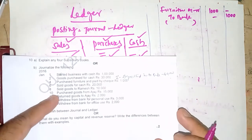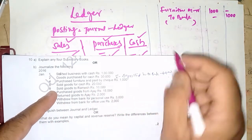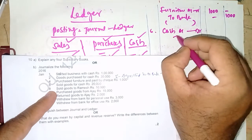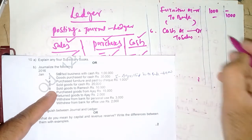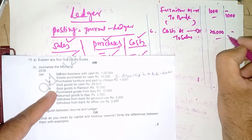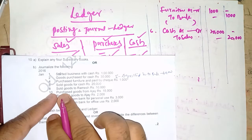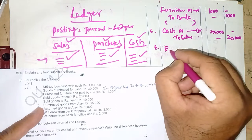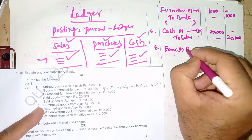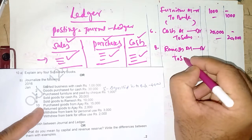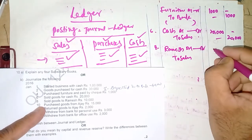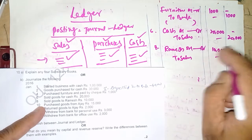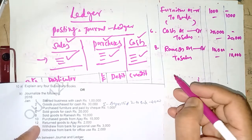Next: sold goods for cash. The entry is: Cash Account debit, to Sales Account — 20,000. Then: sold goods to Ramesh. Ramesh is getting the benefit, so: Ramesh Account debit, to Sales Account — 10,000. We are not getting cash here; Ramesh is getting the goods, so Ramesh account is debited.